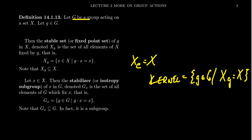Now on the flip side, let's take an element x inside of X. What does its stable set mean? These are typically called stabilizers, sometimes called the isotropy subgroups. Given an element of the G set X, we can define its stabilizer, which is commonly denoted as G sub x — G is the group, x is the element that's getting fixed. G sub x is the set of all elements of the group such that g dot x gives you back x. So these are the things that stabilize x.